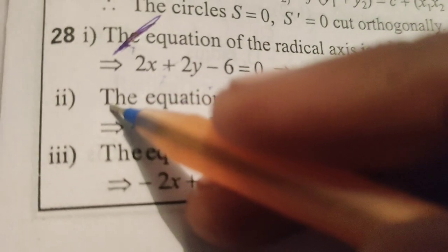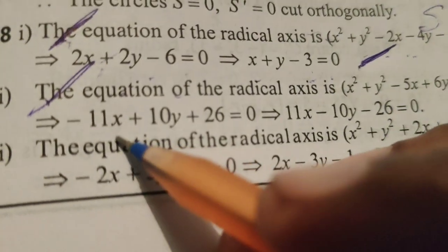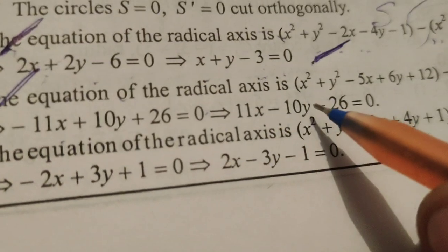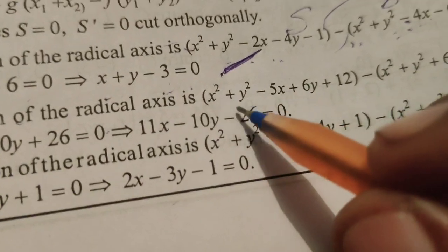This is Dr. Aethi. Now, today we are going to explain this problem. The equation of the radical axis is x square plus y square minus 5x plus 6y plus 12 minus x square plus y square plus 6x minus 4y minus 14.